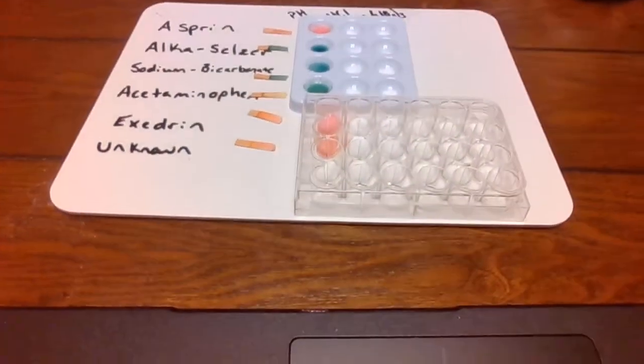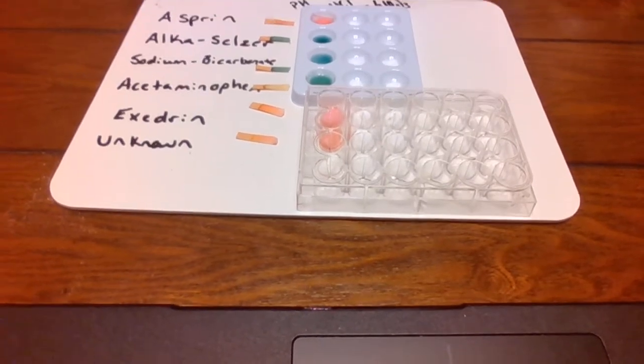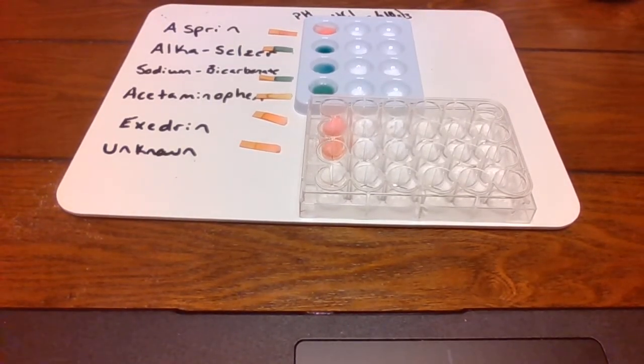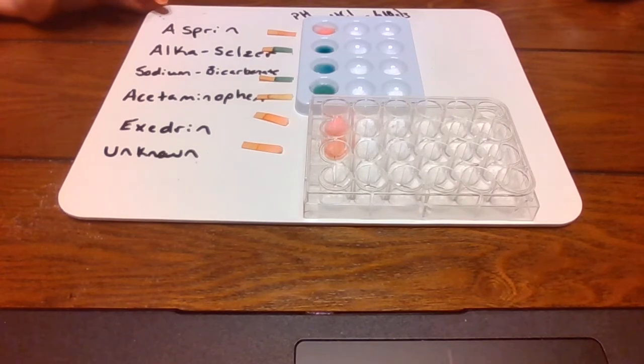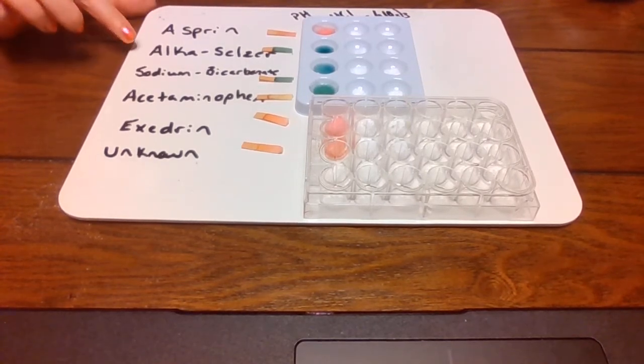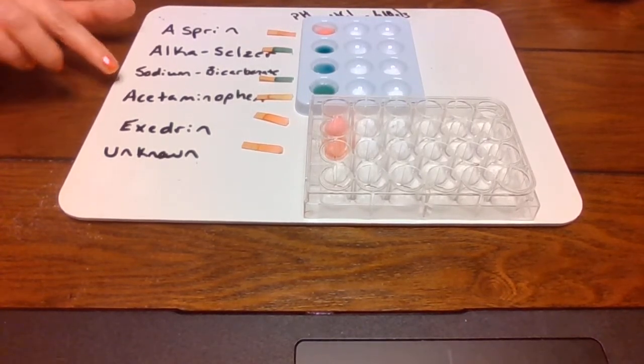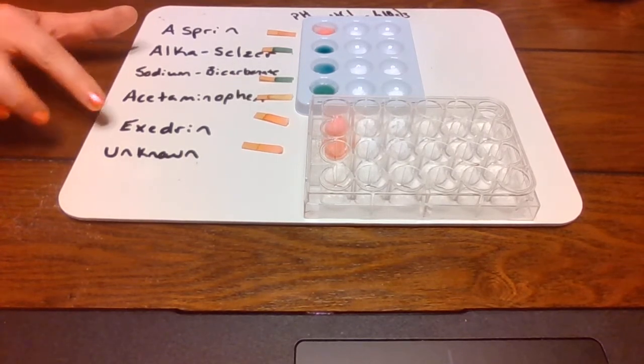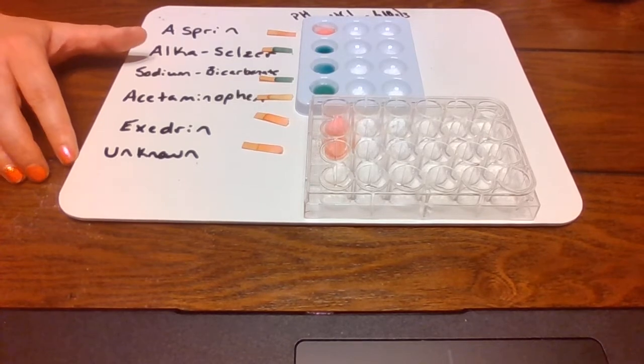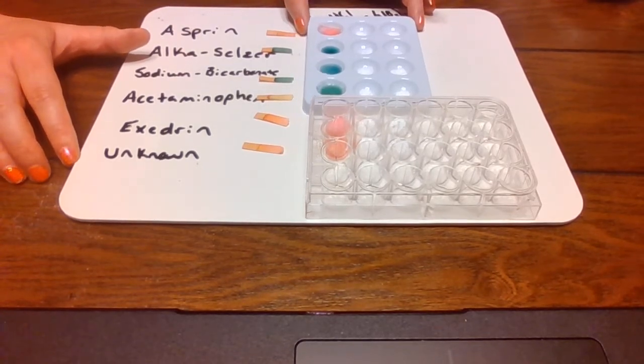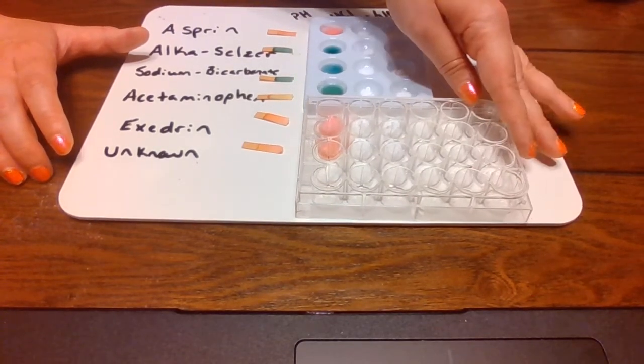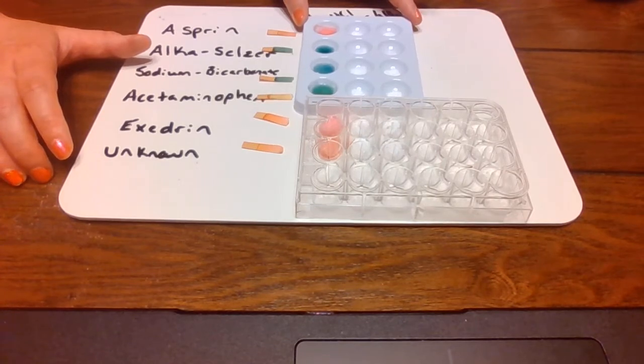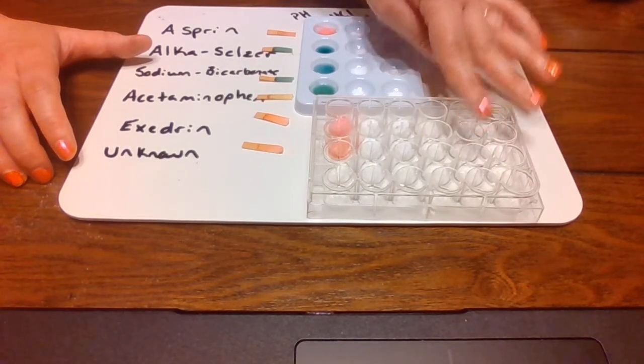So now I'm gonna move our video down and you can see right here is what I was talking about. Our little dishes that we have made, we have aspirin, Alka-Seltzer, sodium bicarbonate, which is basically baking soda but they put it in heartburn medication, acetaminophen, Excedrin, and then we have an unknown. So this unknown you'll hopefully figure out by the end of it to answer your lab questions. That would be the goal is to figure out the unknown.